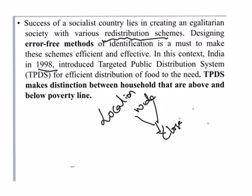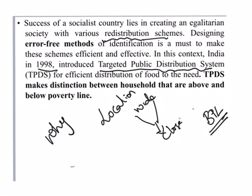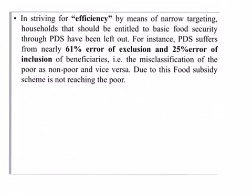In this context, India in 1998 introduced TPDS — Targeted Public Distribution System — to distribute food grains to the poor, that is those who live below the poverty line. TPDS makes a distinction between households that are above and below the poverty line. This completes the introduction.